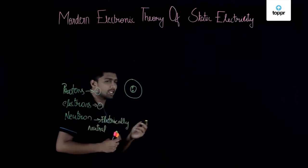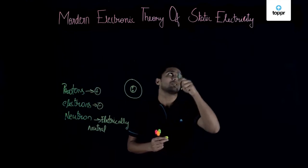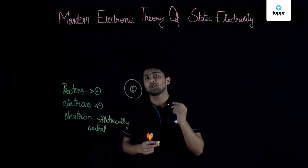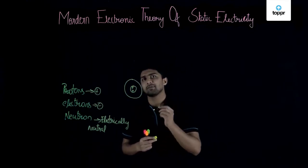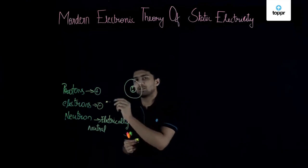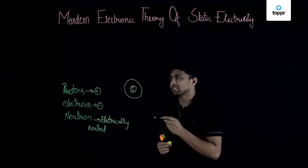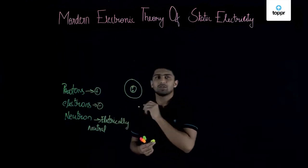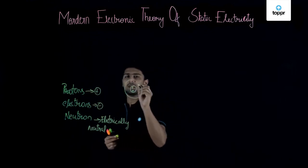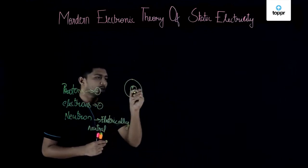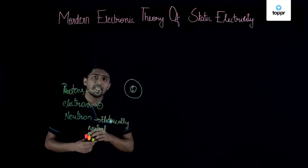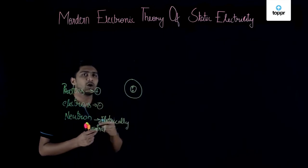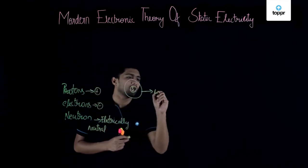Let me repeat what we have learned. We started with the modern electronic theory of static electricity. To understand that, we need a good idea about matter. Matter is made up of atoms. In atoms, we can find protons, electrons, and neutrons, which carry positive, negative charges, and neutrons are electrically neutral. Protons and neutrons are in the nucleus, and electrons revolve around the nucleus along a path called an orbit or shell.